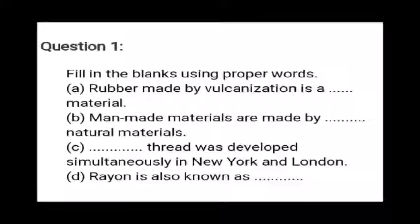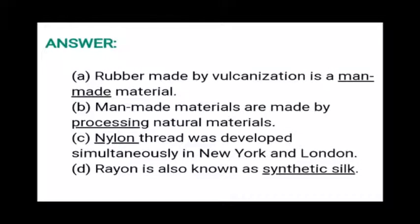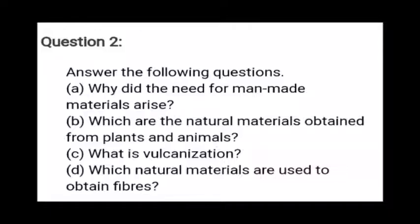Welcome back children. Let's discuss question and answers of lesson number six: Substances in Daily Use. Fill in the blanks using proper words: rubber made by vulcanization is a man-made material; man-made materials are made by processing natural materials; nylon thread was developed simultaneously in New York and London; rayon is also known as synthetic silk.